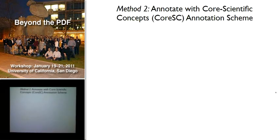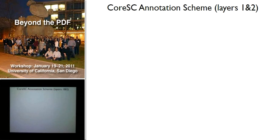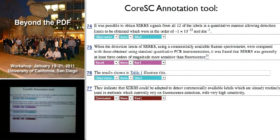I've just introduced my method of annotation, but there are other methods. Maria Leacata, currently working at EBI, looks at a three-layer ontology-motivated annotation scheme for sentence annotation. She looks at the sentence level across three layers: one is the core scientific concepts, where every sentence is classified with one of these. One is the property of the core scientific concepts — specifically, is this a new or old concept, is there an advantage or disadvantage? And then there are concept identifiers, allowing different sentences to be linked together. She has a very nice annotation tool where she can annotate a single sentence with these concepts.